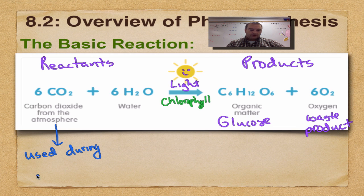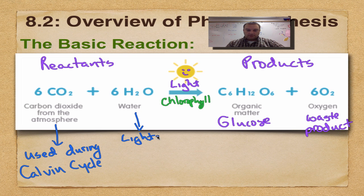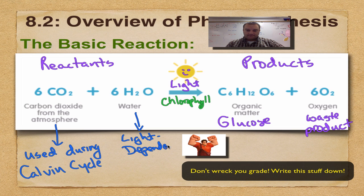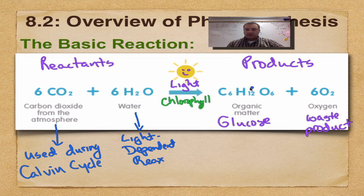Water is used during a step called the light dependent reactions. And I'm going to write 'reacts' for short - that's for reactions. Glucose is made during the Calvin cycle.